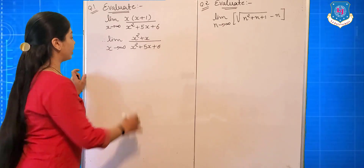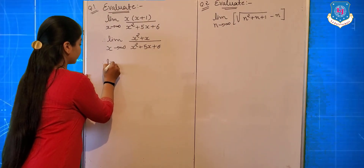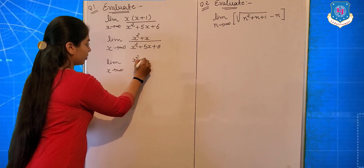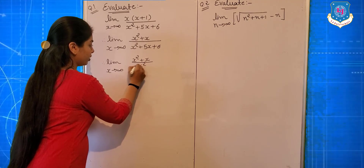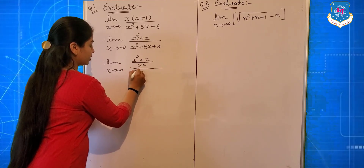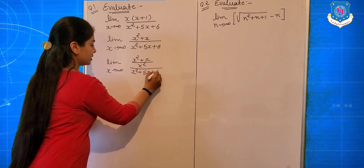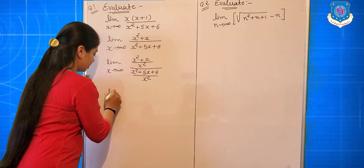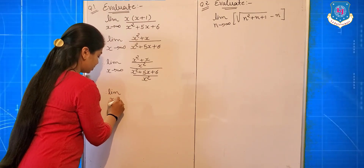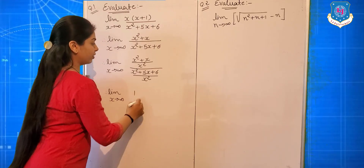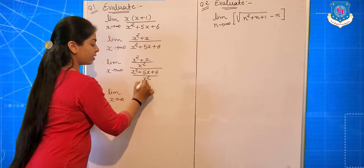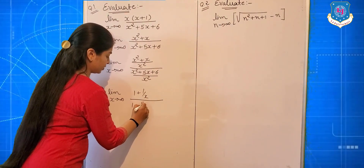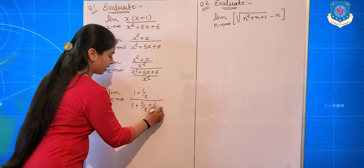So dividing by x². Therefore, limit x tends to infinite of (x² + x)/x² divided by (x² + 5x + 6)/x², which simplifies to limit x tends to infinite of (1 + 1/x) upon (1 + 5/x + 6/x²).